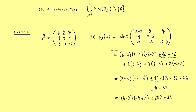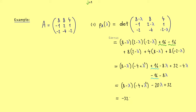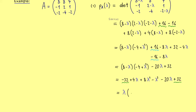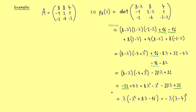Expanding the remaining product gives minus 32 plus 4 lambda plus 8 lambda squared minus lambda cubed. Putting all the numbers together and recognizing that we can factorize a lambda, we get lambda times the quantity minus lambda squared plus 8 lambda minus 16. This expression is not hard to recognize — it can be rewritten as lambda times (lambda minus 4) squared. Since this is a nice factorization of the characteristic polynomial, we can immediately read off the eigenvalues.